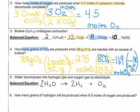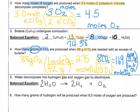But the problem wants grams, so I'm going to use the molar mass of carbon dioxide. One mole of carbon dioxide has a molar mass of 44.011 grams. I multiply 1.69 moles by that molar mass, and my answer is 74.38 grams of CO₂ produced.